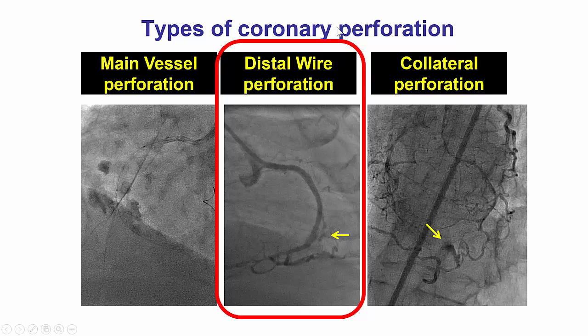There are three major kinds of perforation. The first one is the main vessel perforation, where there is rupture within the main vessel architecture, and we already have a webcast describing how to treat this that focuses mainly on delivering covered stents. Distal wire perforation is the second major category, and there is also a special group called the collateral vessel perforation that applies to retrograde CTO intervention. However, many of those can be treated with techniques discussed for distal wire perforation.